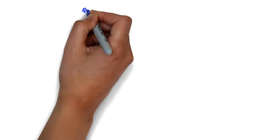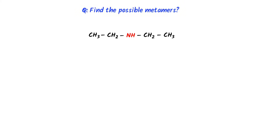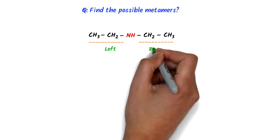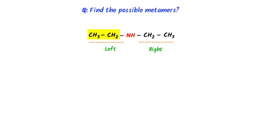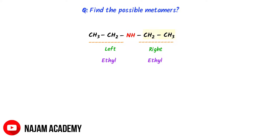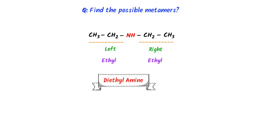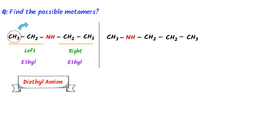Now let me teach you one important question: find the possible metamers of this amine. The left side of this amine has one ethyl, while the right side also has one ethyl. So the name of this amine is diethyl amine. Now I will shift one alkyl from the left side. Remember that when we shift the alkyl, we give one hydrogen to this carbon to complete its valency. This gives us the second metamer of this amine.